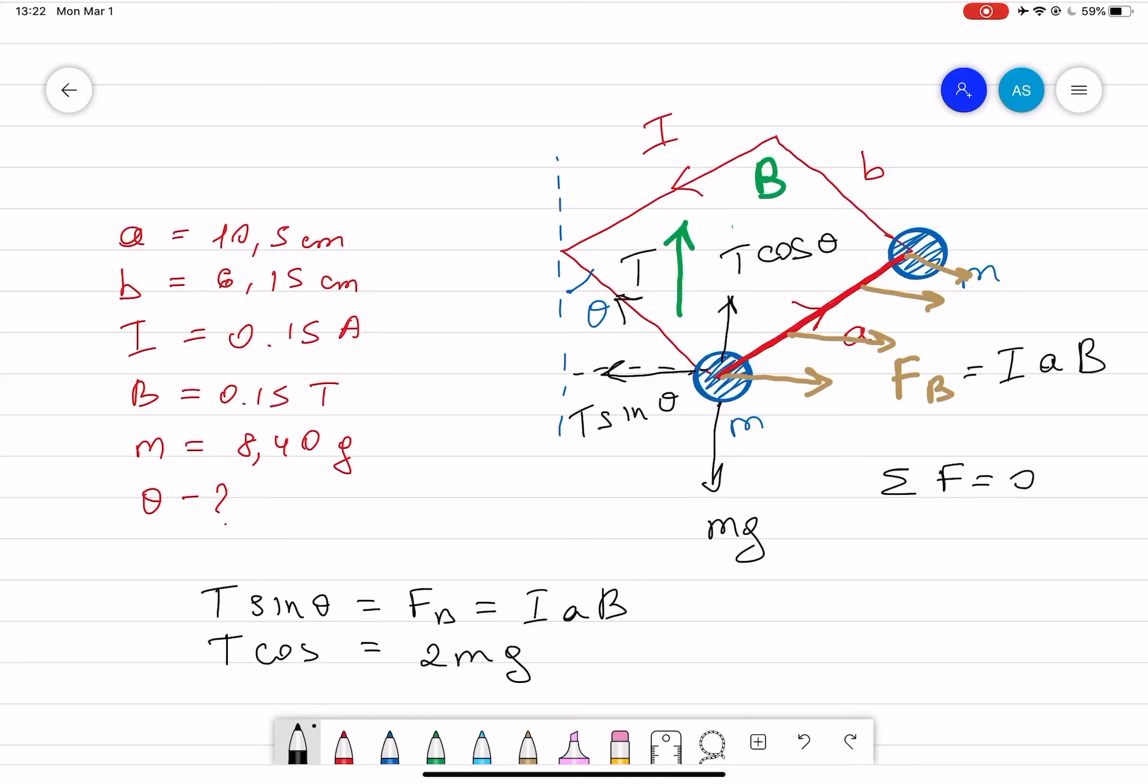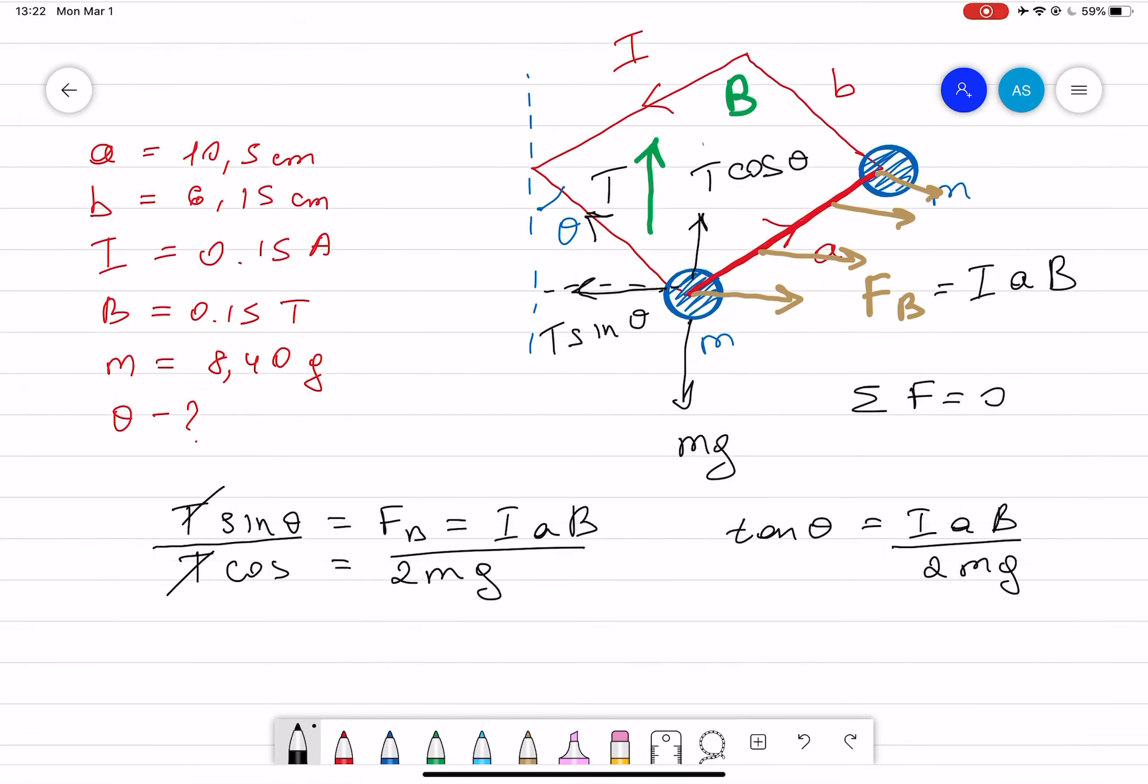Now if you divide those things together, this T will cancel out. That will give you tangent theta which is equal to the current IAB divided by 2mg. Now, if you want to find theta then theta is equal to inverse tangent IAB divided by 2mg.